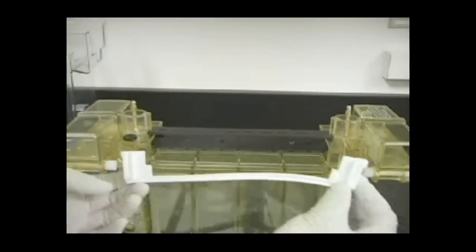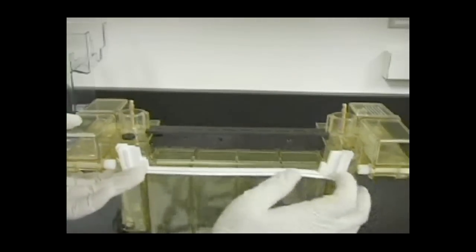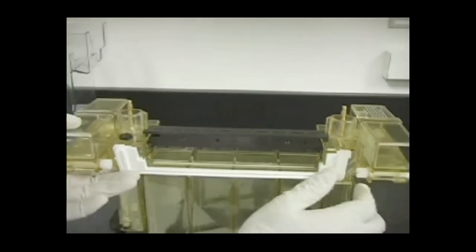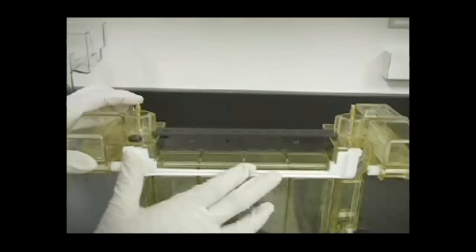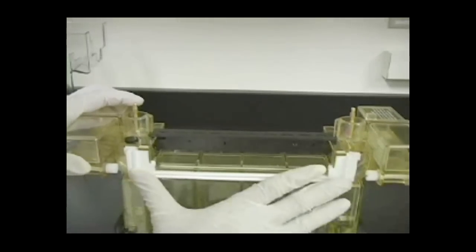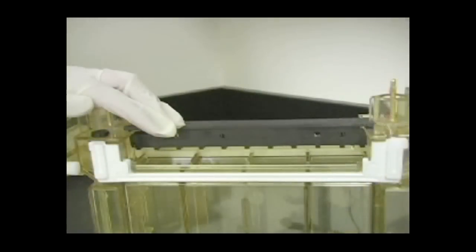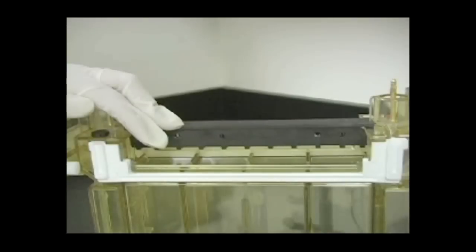After the gels are cast and polymerized, assemble the upper buffer chamber by seating the wide sealing gasket onto the central cooling core. Lubricate the front of the gasket with water or buffer to help the gel sandwich slide onto the gasket properly.